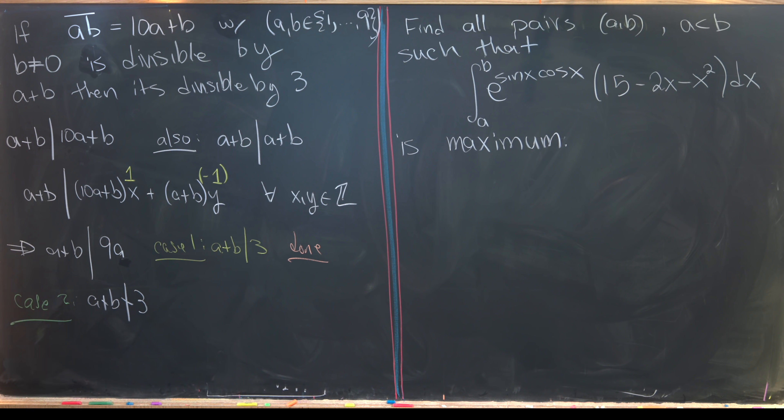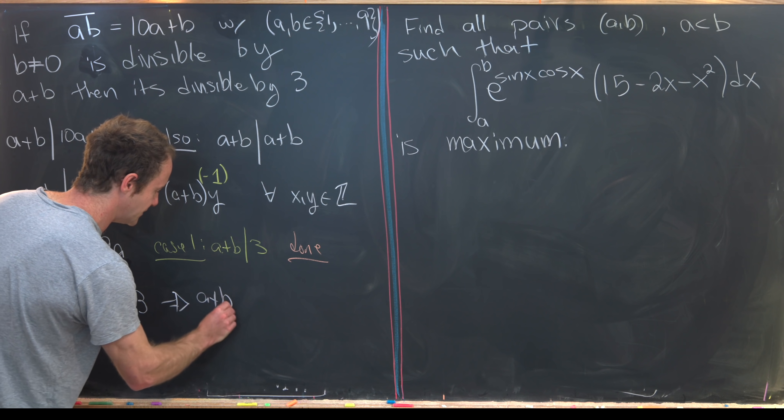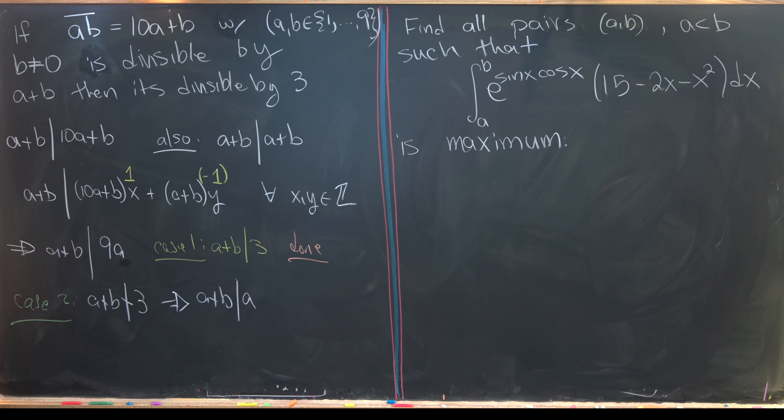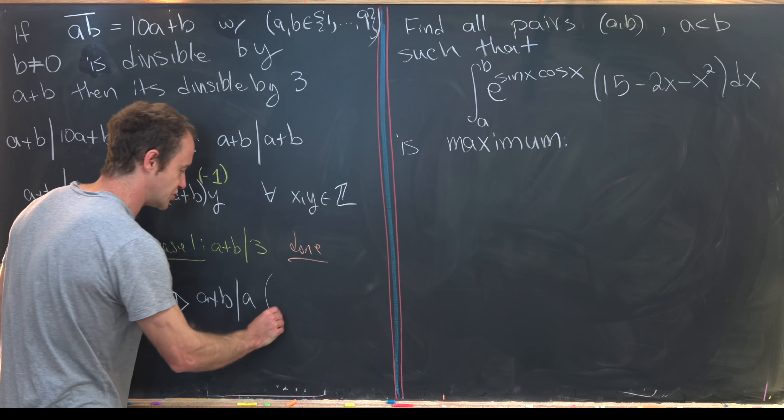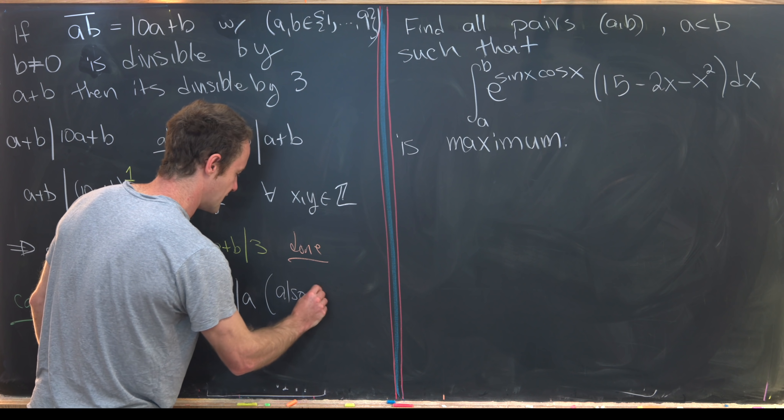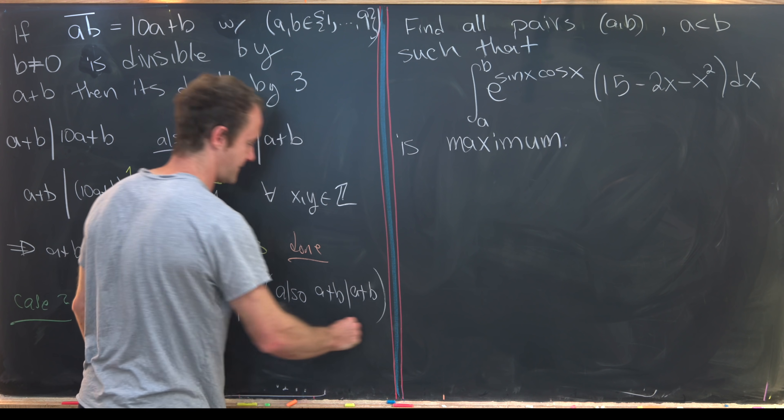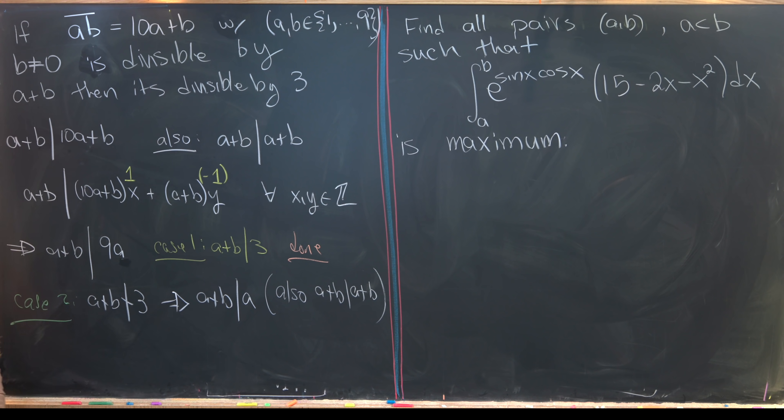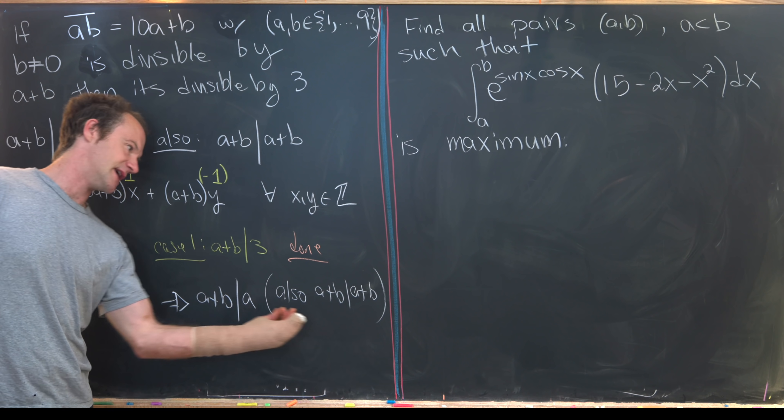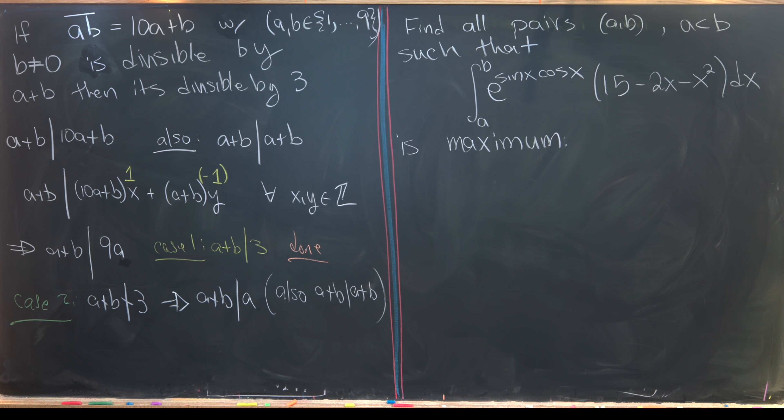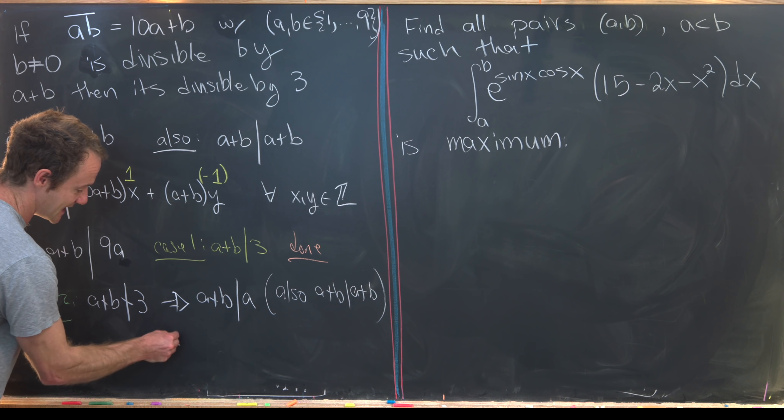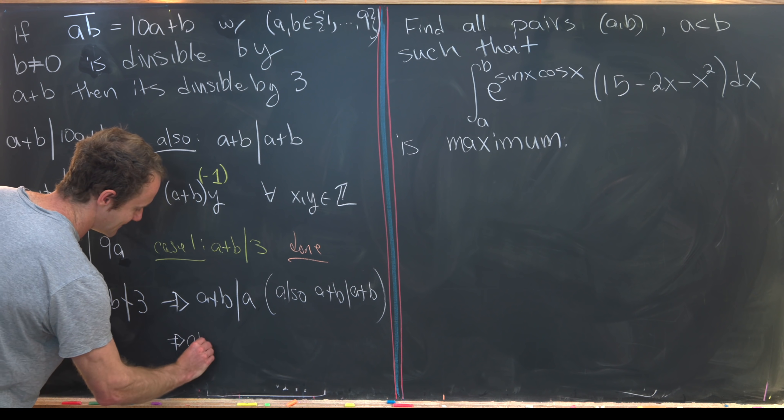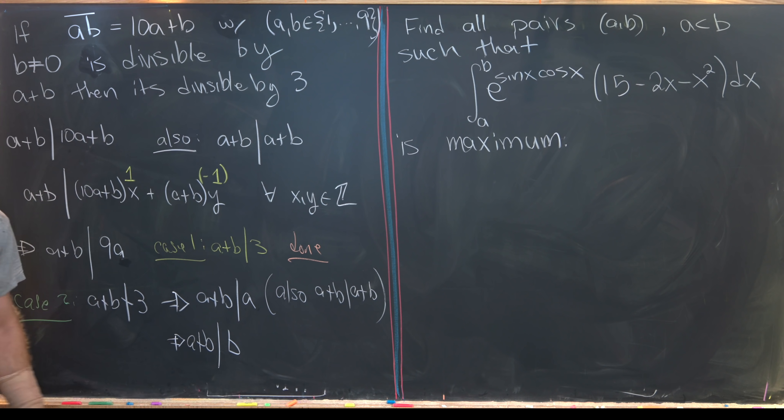But if a plus b does not divide 3, then that means it also does not divide 9, but that means it divides a. So we have a plus b divides a. And now we can play this same game. So just also, we know that a plus b divides itself. So that means a plus b divides any linear combination of a and a plus b. So we could, again, take a difference here and see that that means that a plus b divides b.